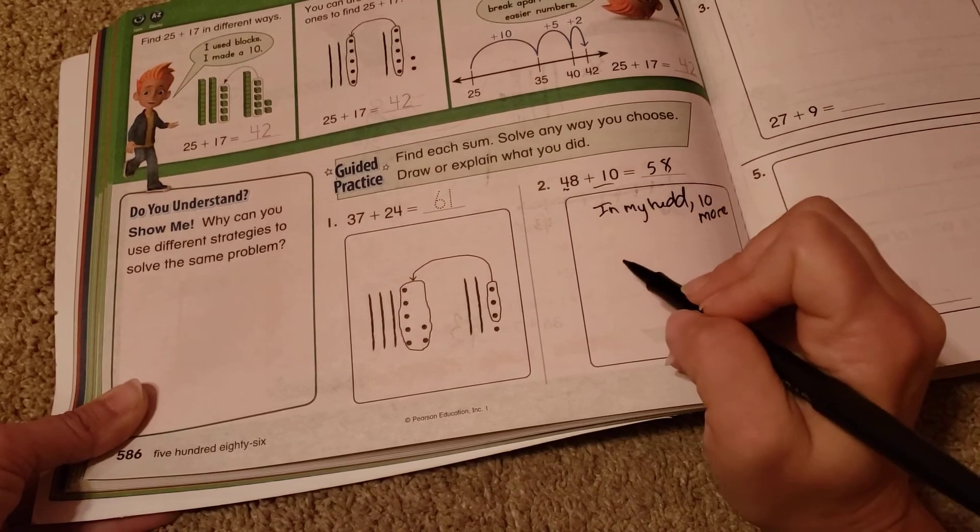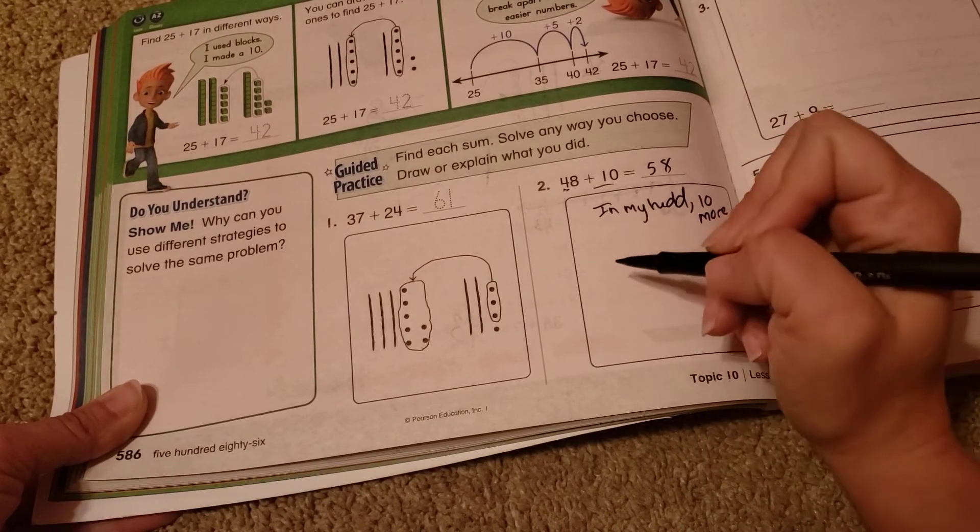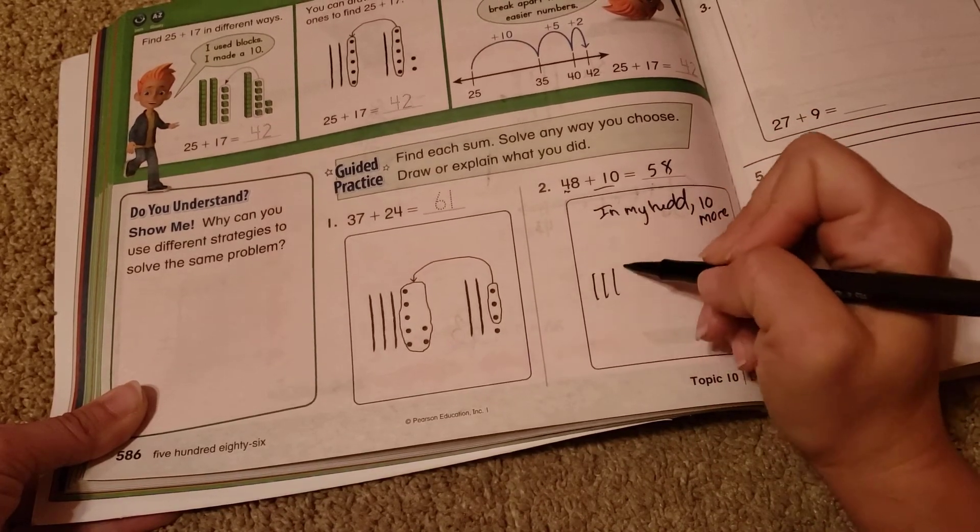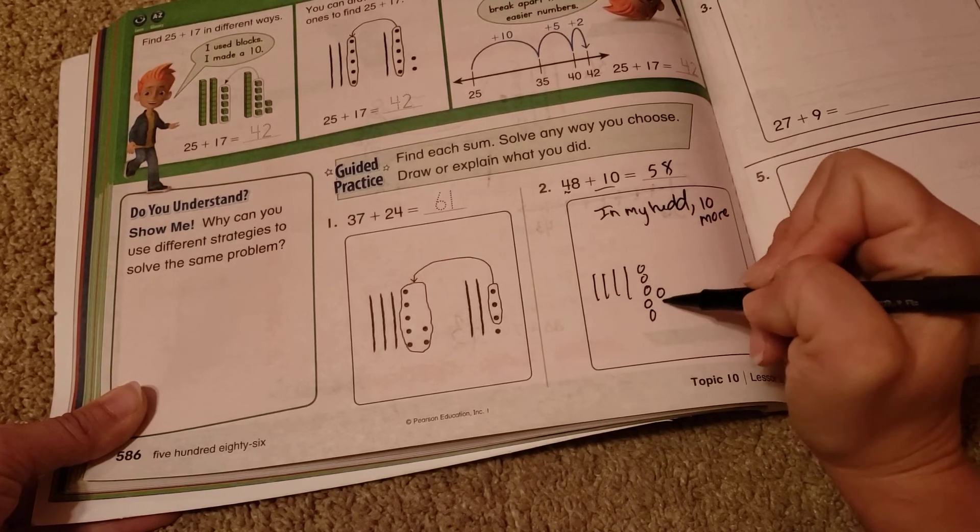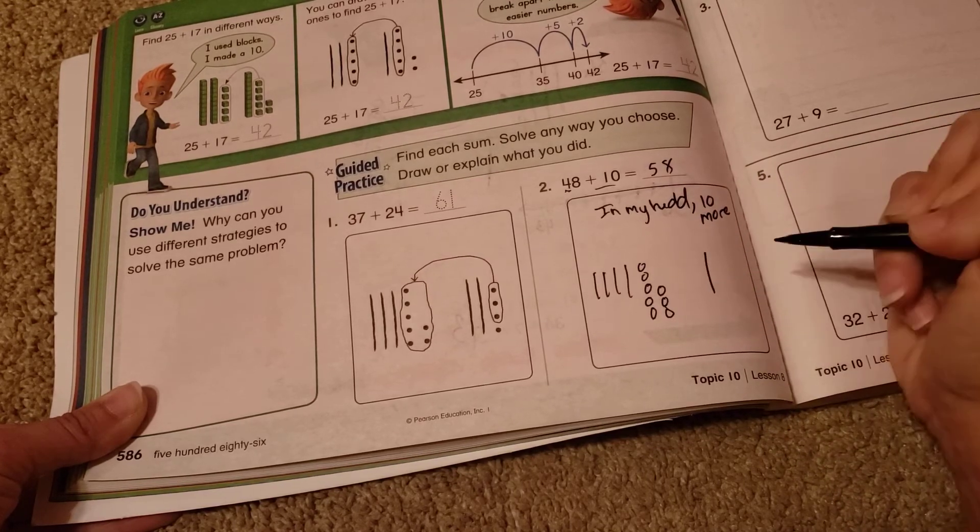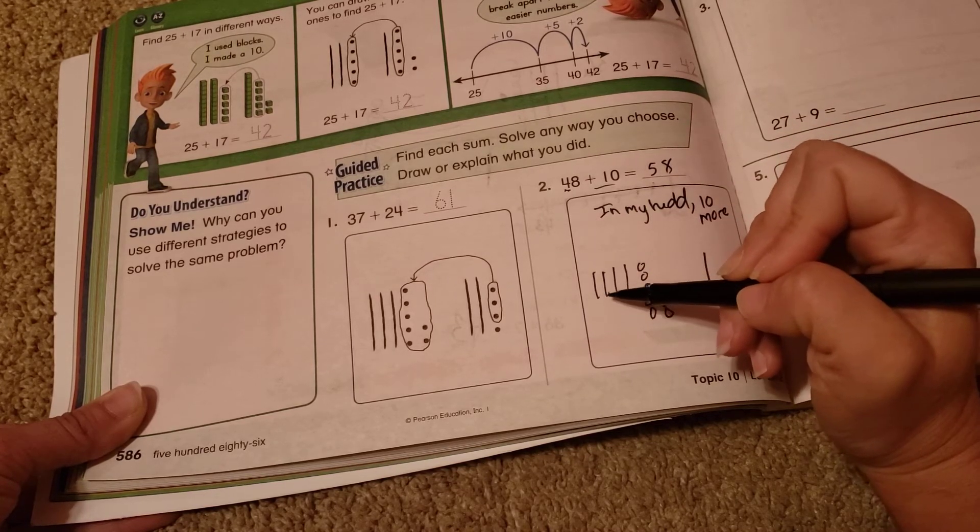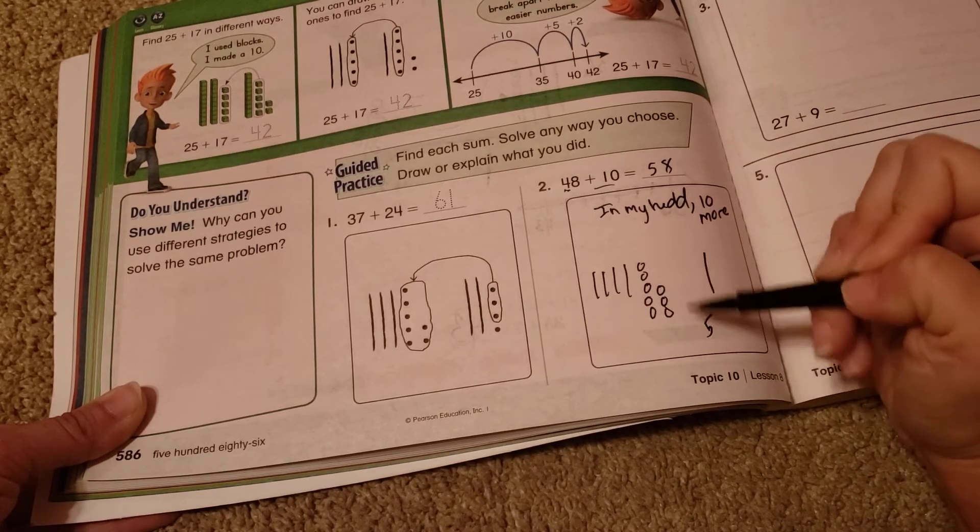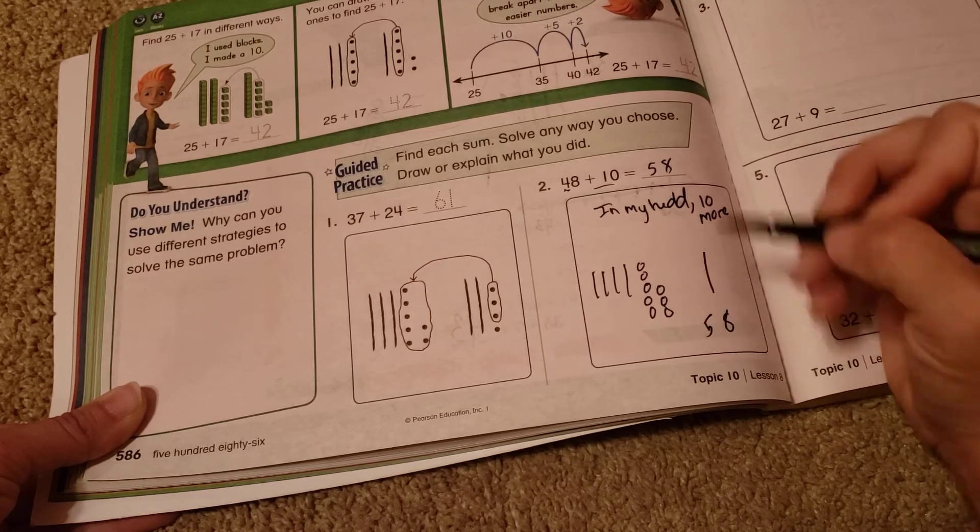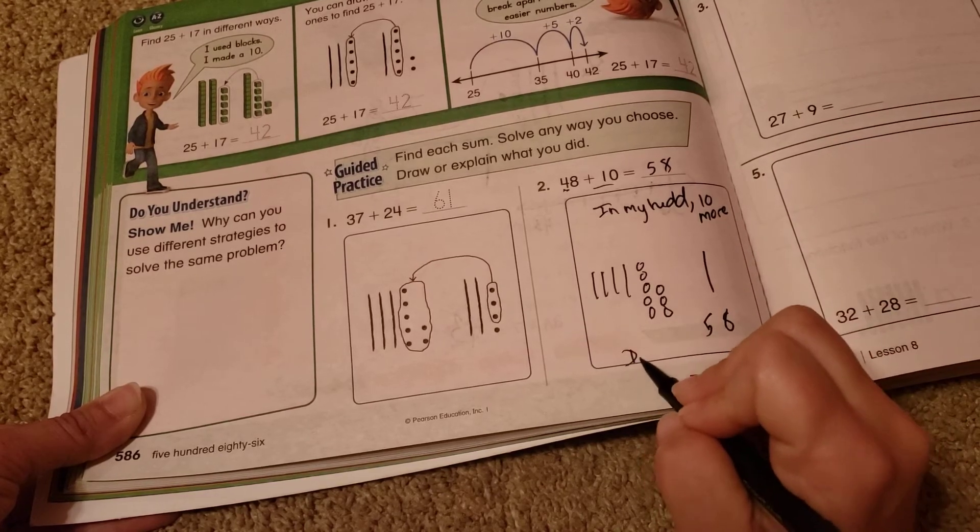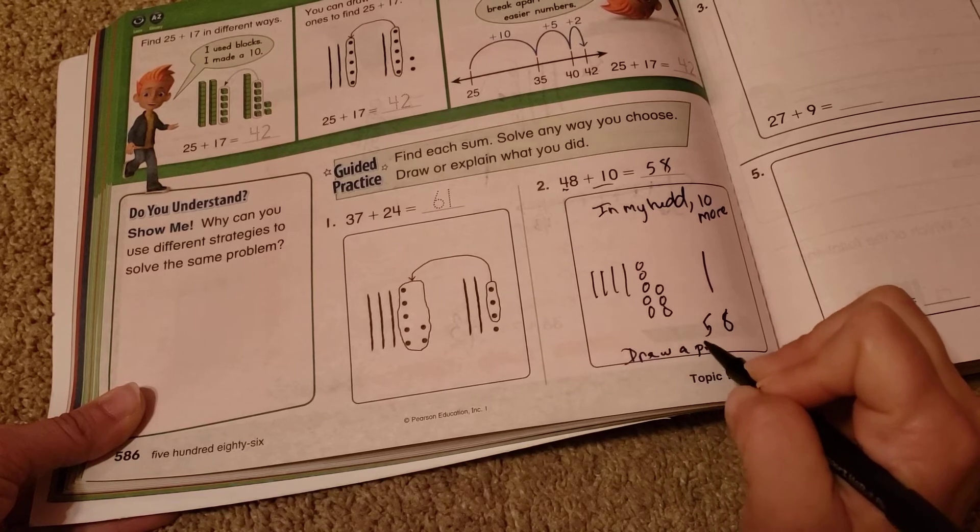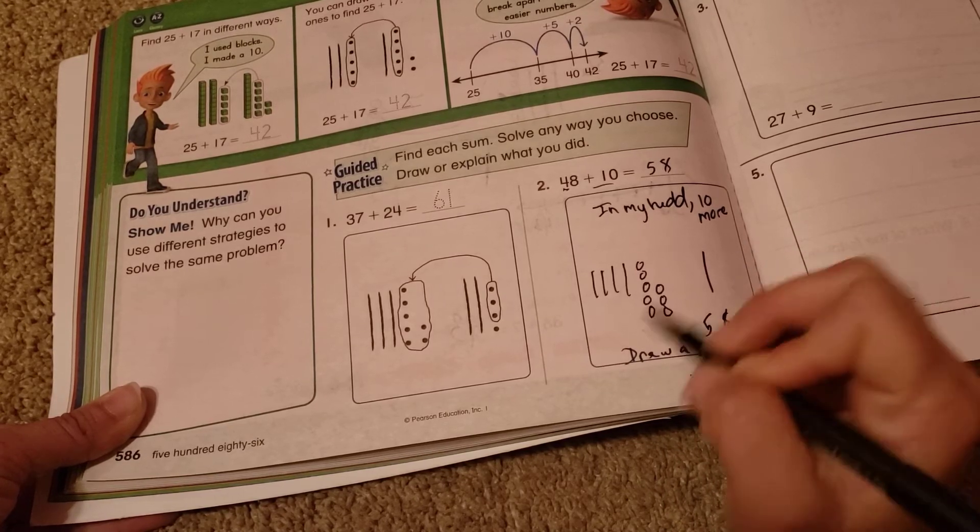Or maybe you wanted to do a picture. And then you have your tens: one, two, three, four, five tens, eight ones. You get the same answer. But if you did it that way, you'd say draw a picture or make 10.